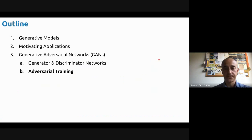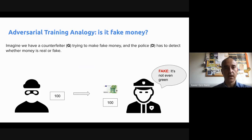Let's see about how to train these two networks. We have two networks and we know what we want them to do. I'll start with an analogy, because this training will be very iterative — it will be kind of a trial and error, especially for the generator.